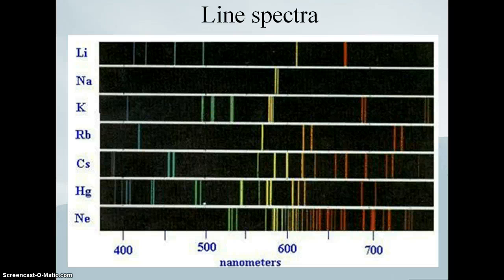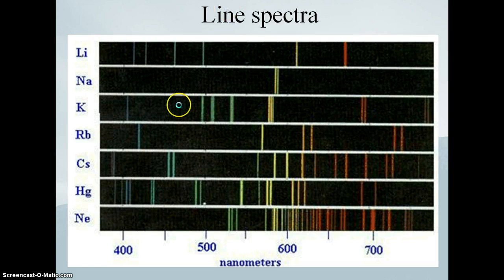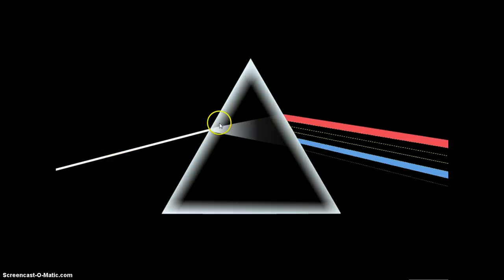We can do this with every single element. What this basically shows is a listing of the line spectra for six or seven different elements. So if we were to take lithium as an element and excite it — whether by putting it into a firework or by electrifying it and putting it into what's called an emission tube — and then take that emission and run it through a prism or diffraction grating, we can see the individual spectral lines.